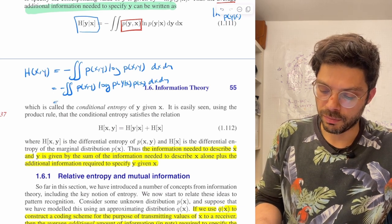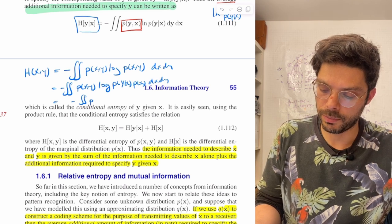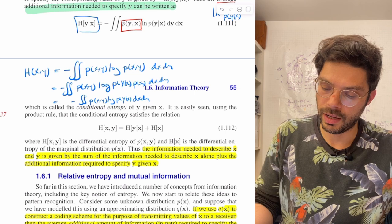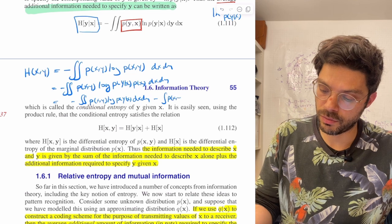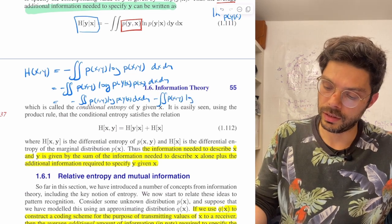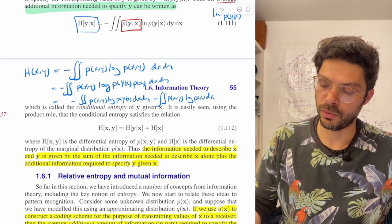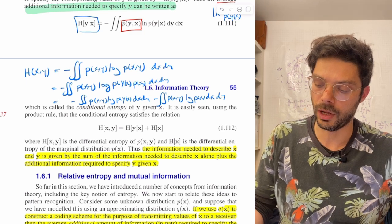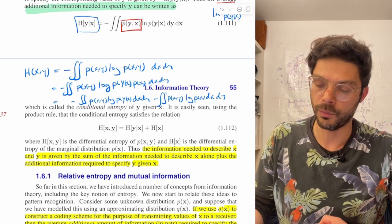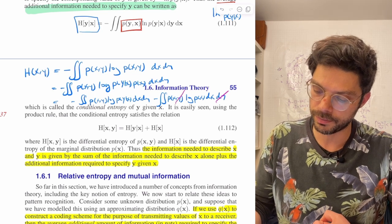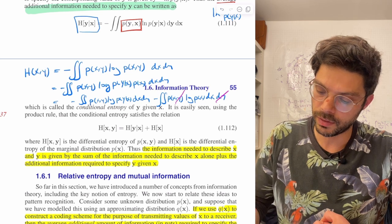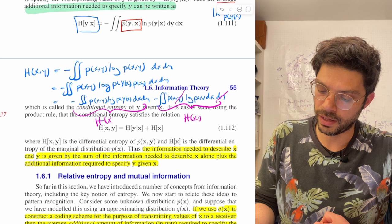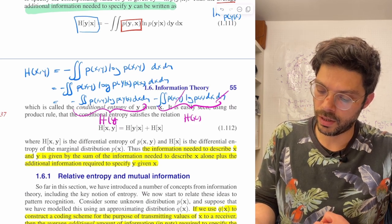And then we just split that up. We could just split that up into minus the double integral of p of x, y log of p of y given x dx dy, minus p of x, y double integral log of p of x dx and dy. But now, in this latter integral, the log of p of x doesn't have any p of ys in it, so that means that we can just integrate out the y from this joint distribution, so that disappears. And so now this term is just h of x, and this term here is h of y given x.